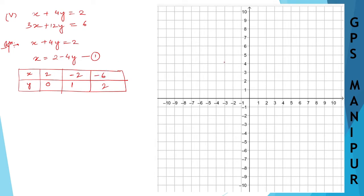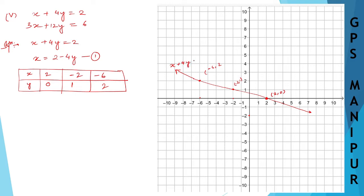For the graph: x = 2 and y = 0 gives point (2, 0). x = −2 and y = 1 gives point (−2, 1). x = −6 and y = 2 gives point (−6, 2). Join these points to form the line, which we label as AB. This represents x + 4y = 2.